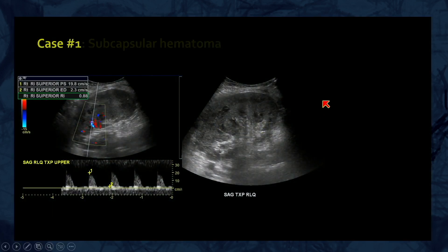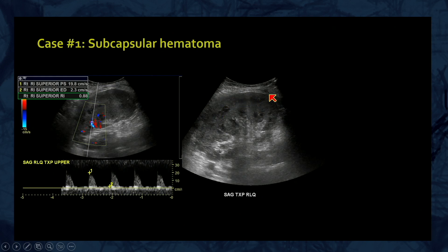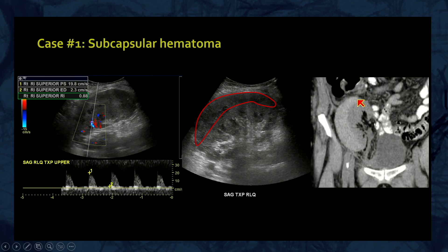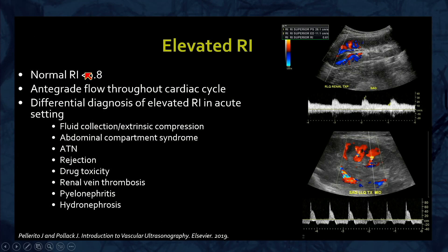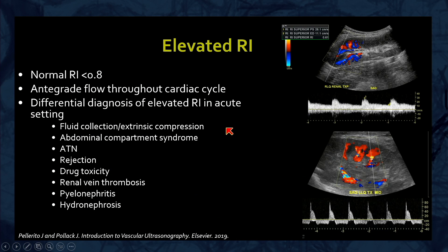Let's look at the answers. Case one is a subcapsular hematoma — you can see this crescentic area along the renal margin, which is very isoechoic to the parenchyma. If you're reading quickly, you might not recognize this isoechoic hematoma. Also notice there's some increased parenchymal resistance. These hematomas can often be seen as high-attenuation collections on non-contrast CT. The normal RI should be less than 0.8, or some sources say less than 0.7. These kidneys should have continuous antegrade flow throughout the cardiac cycle — you should never have reverse diastolic flow. The differential for an elevated RI includes extrinsic compression from a fluid collection.